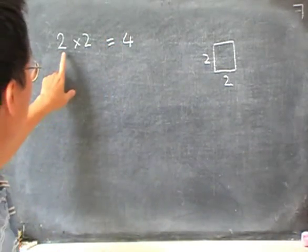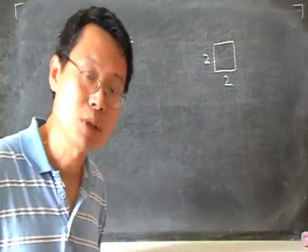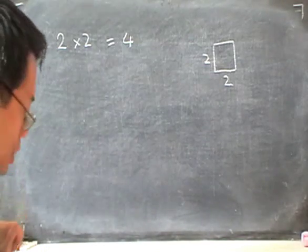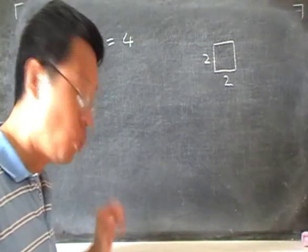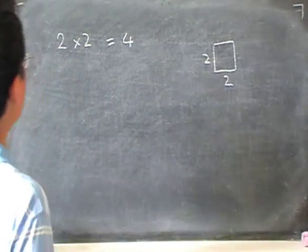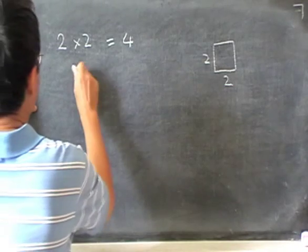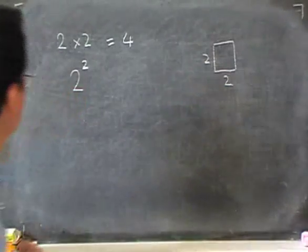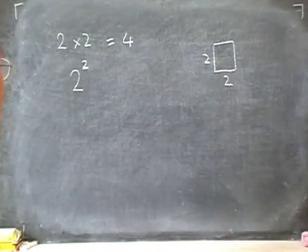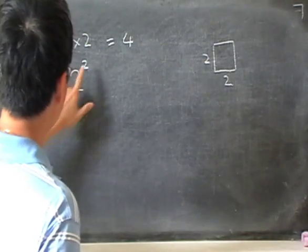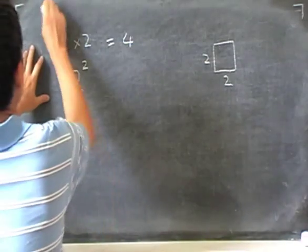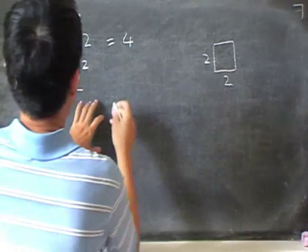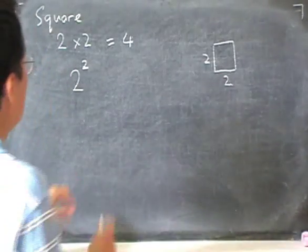we call a product where we multiply the same two numbers together, we call it square. And there's a special way of writing a square. So if I have 2 times 2, it can also be written as 2 with a little 2 on the top right hand side. So if I see this, I call it 2 squared. So 2 squared is really the same as 2 times 2, which is 4.